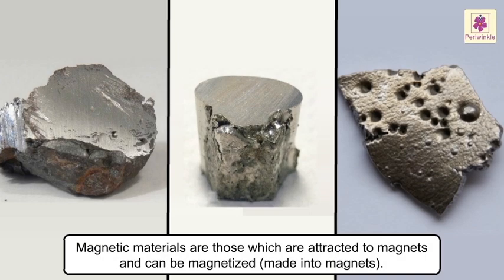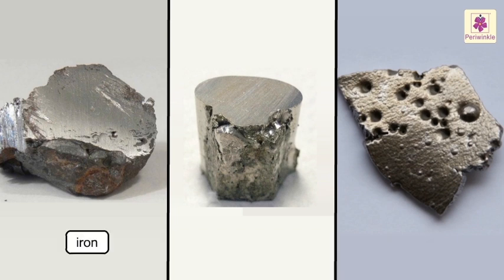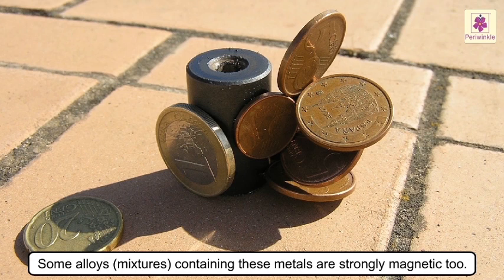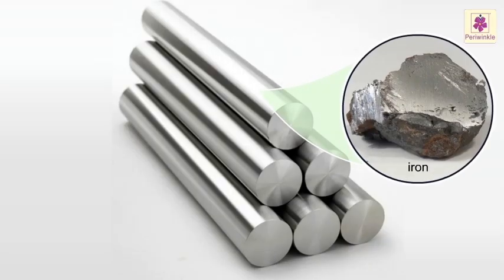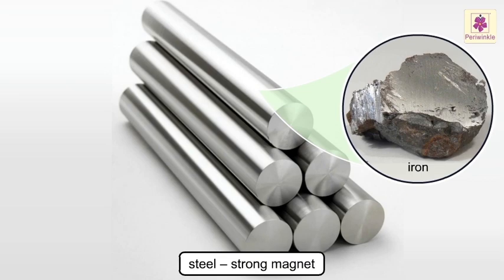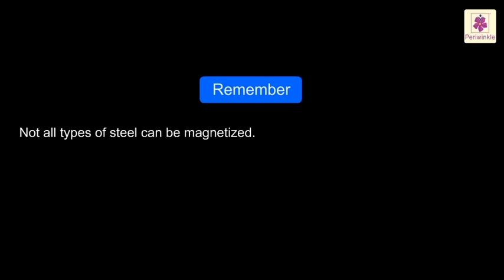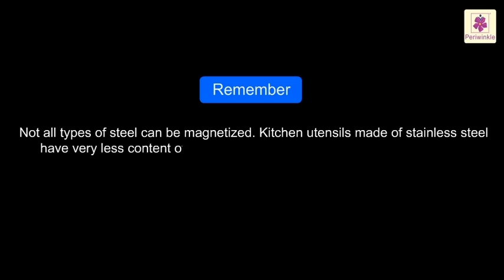Magnetic materials are those which are attracted to magnets and can be magnetized, i.e. made into magnets. The metals iron, nickel and cobalt are strongly magnetic. Some alloys, i.e. mixtures containing these metals, are strongly magnetic too. Steel contains a lot of iron, so it acts as a strong magnet. Remember, not all types of steel can be magnetized. Kitchen utensils made of stainless steel have very little iron content and hence cannot be used for this purpose.